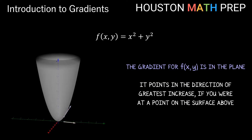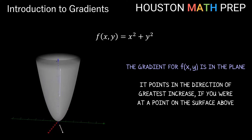Here's our function z = x² + y². For any point on the surface, you can see the gradient in the xy-plane below. If you imagine standing on the surface at any point, the gradient tells you which direction to walk to travel uphill as steeply as possible. You might notice the gradient sometimes has a small magnitude and sometimes a larger magnitude.